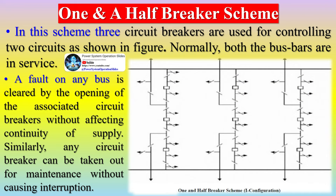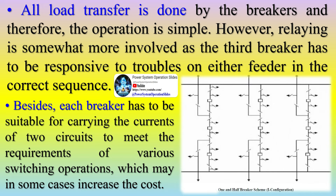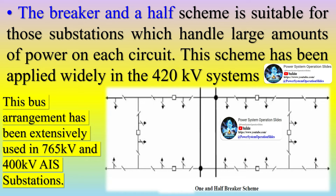In the one and a half breaker scheme, three circuit breakers are used for controlling two circuits. Normally both busbars are in service. A fault on any bus is cleared by the opening of the associated circuit breakers without affecting continuity of supply. Any circuit breaker can be taken out for maintenance without causing interruption. All load transfer is done by the breakers, so operation is simple. However, relaying is somewhat more involved as the third breaker has to be responsive to troubles on either feeder in the correct sequence. Each breaker has to be suitable for carrying the currents of two circuits, which may increase cost. This scheme has been applied widely in 420 kV systems and is suitable for substations handling large amounts of power on each circuit.